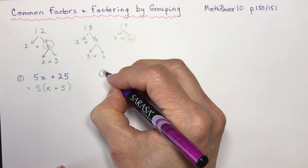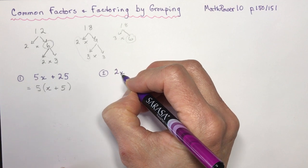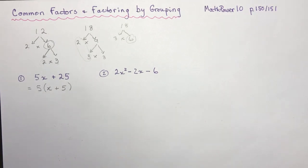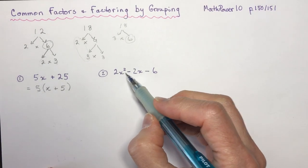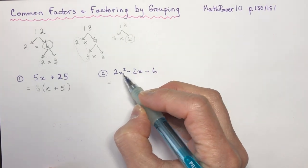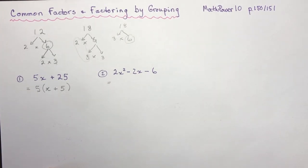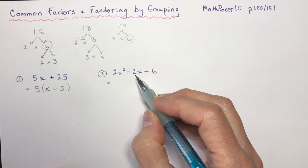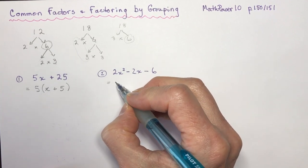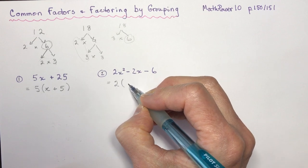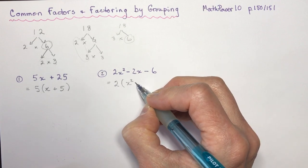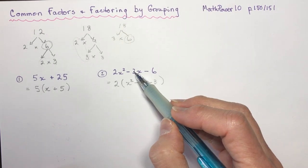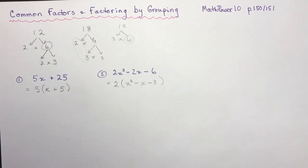Let's try a trinomial: 2x squared minus 2x minus 6. What is a common factor of these three terms — what can I divide each by? I can divide 2 into every one. So I take out a 2 and I'm left with 2 times (x squared minus x minus 3). All I'm doing is dividing each term by 2. Expand and you can double-check your answer.